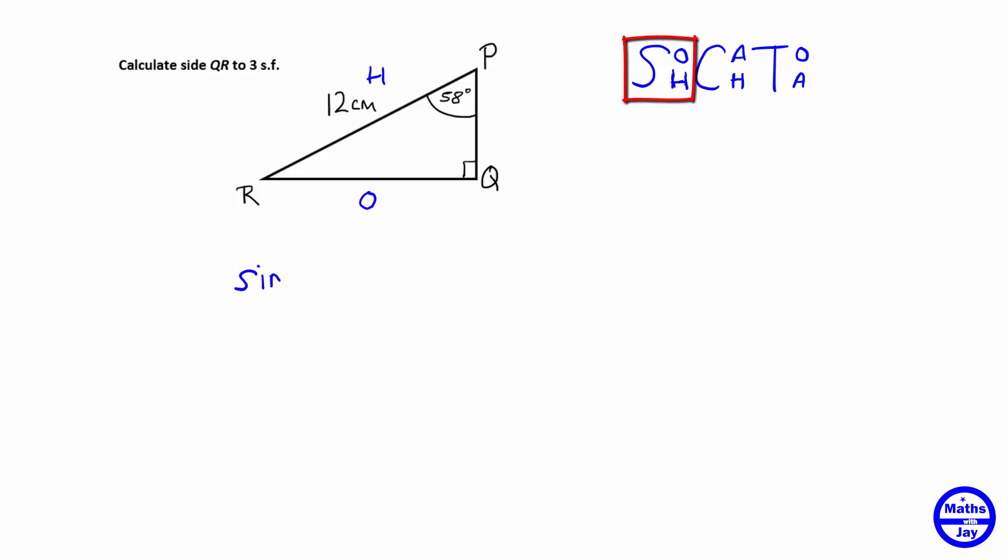So we know that the sine of angle 58 is the opposite over the hypotenuse, so in this triangle that means it's side QR divided by the hypotenuse which is 12.